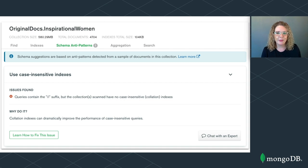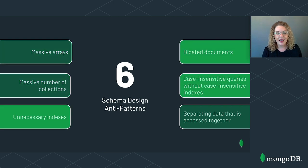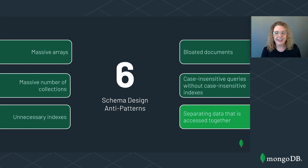In this video, I want to help you understand the schema design anti-patterns so that if Atlas shows you a warning like this, you understand what it means. Even better, I want to help you understand the anti-patterns so you can prevent them from occurring in the first place. In this video series, I'll be discussing six MongoDB schema design anti-patterns. Today I'll cover the first two: massive arrays and massive number of collections. In part two, I'll discuss unnecessary indexes, bloated documents, and case insensitive queries without case insensitive indexes. In part three, I'll discuss the final anti-pattern — separating data that is accessed together — and summarize all of the anti-patterns.